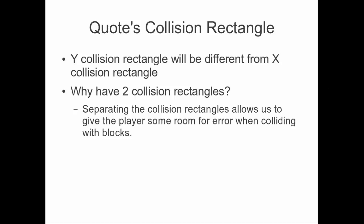Why have two collision rectangles? By separating the collision rectangles, this allows us to give the player some room for error when colliding with blocks. Say he's about to get on a tile but doesn't quite make it — if we only have one collision rectangle, he'll just get bumped off. But with two, we can bump him up to the height of the tile. This makes the game more forgiving and more fun for the player.